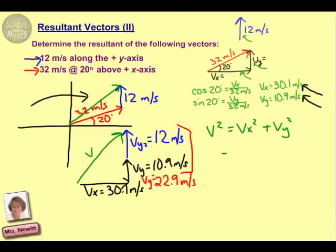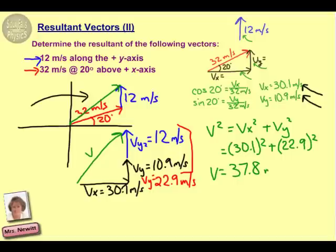Take our two values that we have in the x direction. That's 30.1. In the y direction, that's the sum of our two parts together. That's 22.9. And doing the Pythagorean theorem, we get a resultant value of 37.8 meters per second.